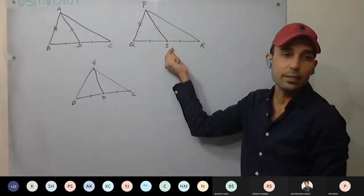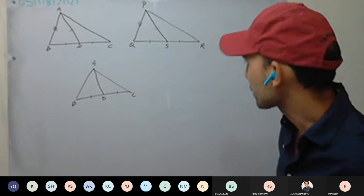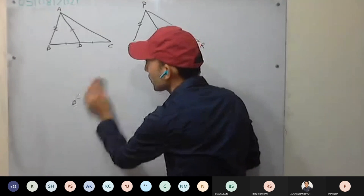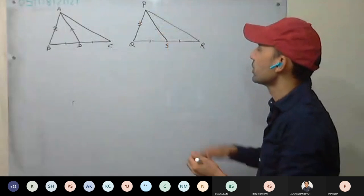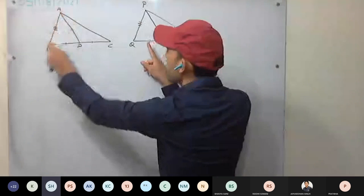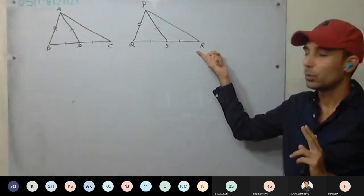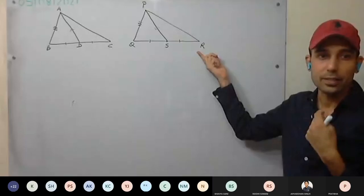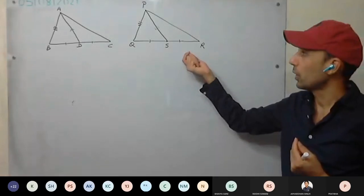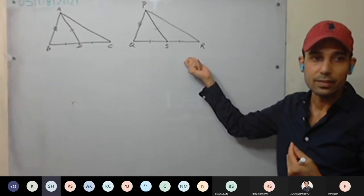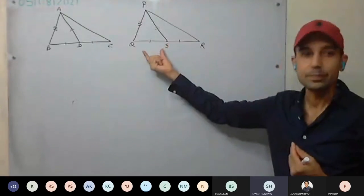Now we have to prove triangle ABC is congruent to triangle PQR. If we want to prove them, we can prove AB equals PQ and BC equals QR — two sides we can prove. But we need one more extra part, maybe an angle or a side. A student suggests: first we can prove triangle PQS is congruent, then we can prove triangle PQR.